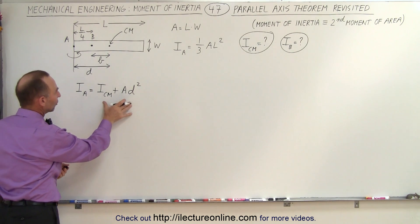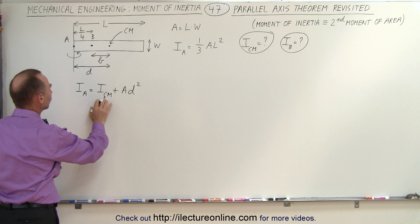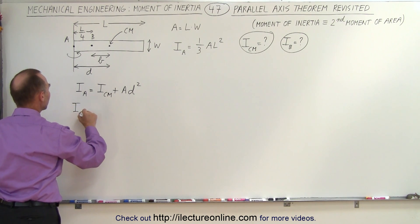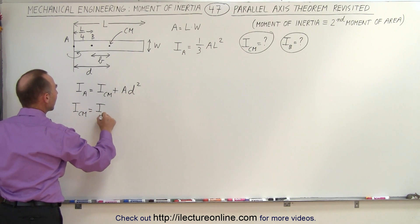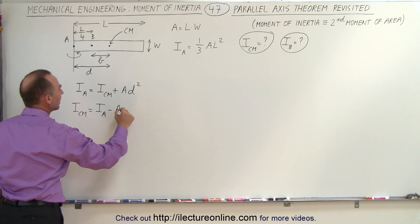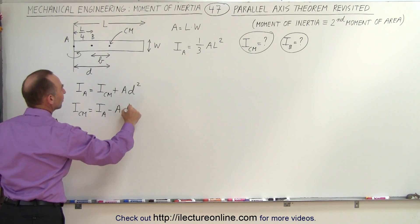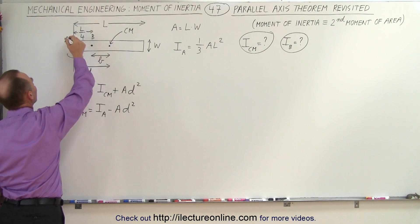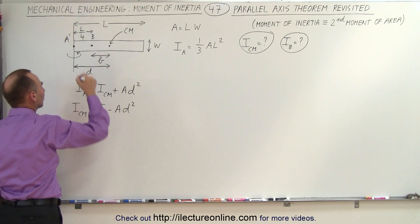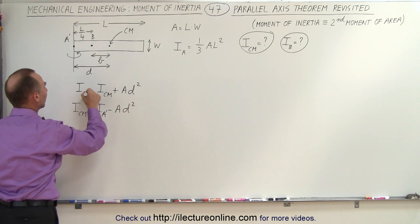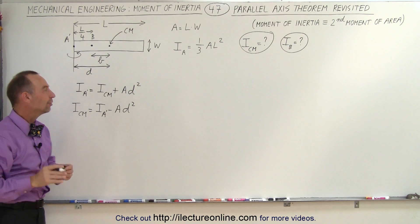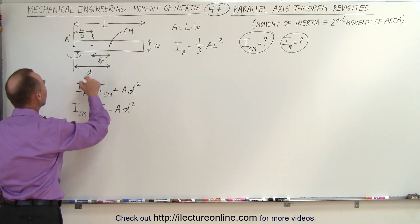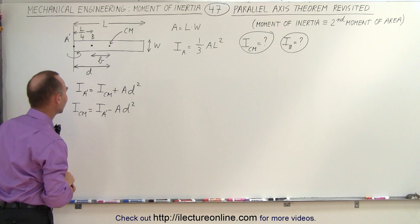We take this equation and solve it for the moment of inertia at the center of mass: ICM equals IA minus A′ times D squared. Be careful — A′ here is the area, not point A, so I'll use A prime to avoid confusion with the location A at that point on the diagram.